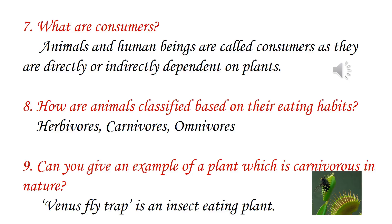How are animals classified based on their eating habits? Herbivores, carnivores and omnivores. Can you give an example of a plant which is carnivorous in nature? Venus flytrap is an insect-eating plant. Interesting, isn't it?